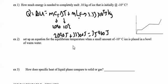And it says, we'll set up an equation for equilibrium temperature when a small amount of negative 10 degree ice is placed in a bowl of warm water.